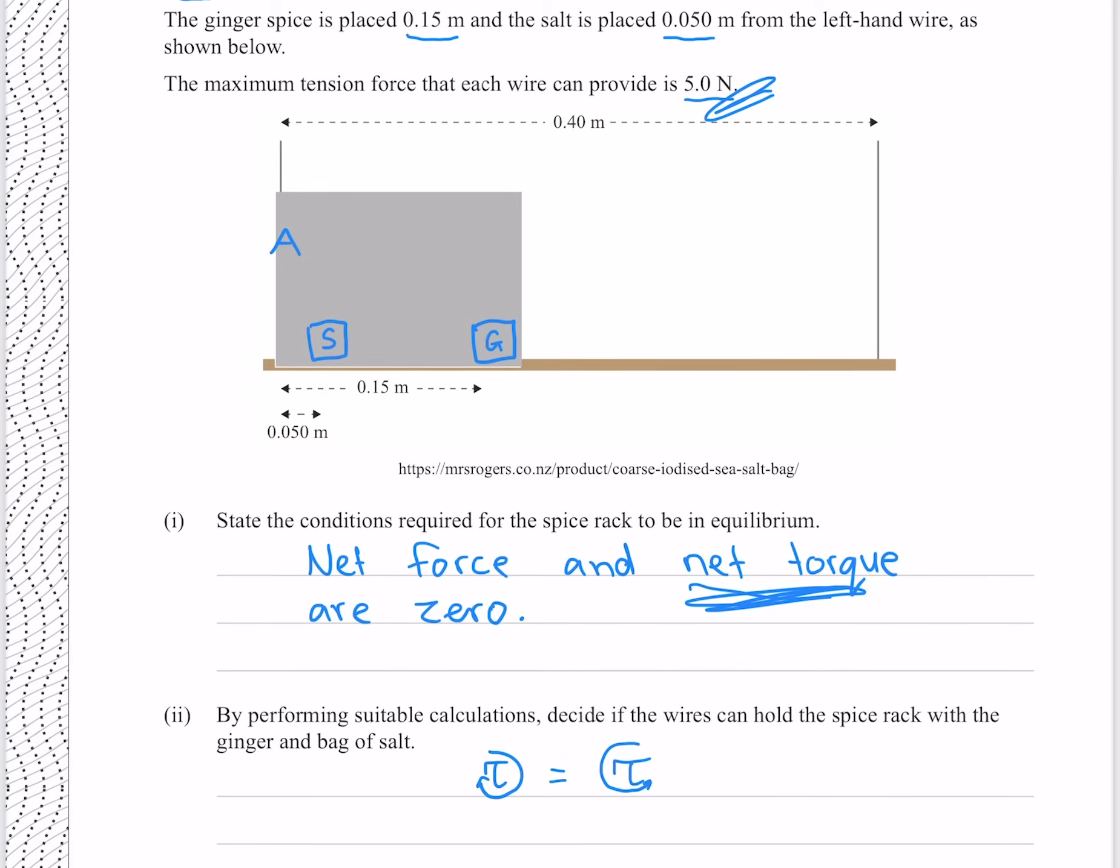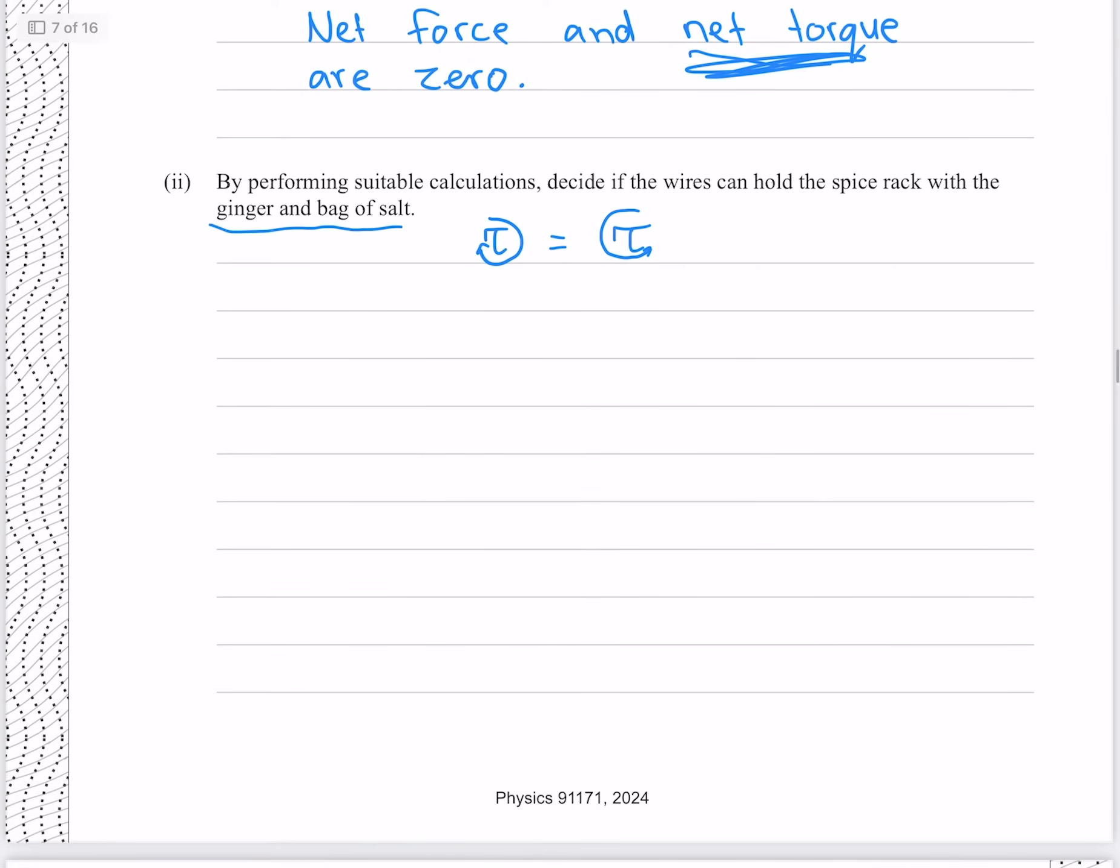If this is wire A, and this is wire B, then because these salt and ginger are closer to wire A, it must have a larger force. So we'll find that force, because if it's greater than 5 newtons, then we know the spice rack cannot hold up the ginger and bag of salt. To do that, we need to make a pivot right here, which has the benefit of not requiring any knowledge about the force at this location, since its distance from the pivot is 0, and the torque therefore is 0 from this location. Making the pivot here, makes these two counterclockwise torques, because they're trying to turn the clock as it were in the counterclockwise direction, as is the torque produced by the weight of the beam. The torque provided by wire A however, is in the clockwise direction. So our clockwise torque is the torque from A, whereas our counterclockwise torques are the torque from our salt, plus the torque from our ginger, plus the torque from our rack.